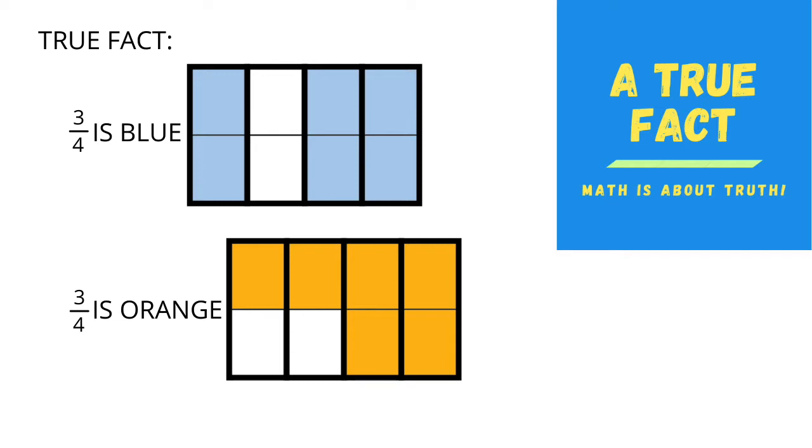Here's a hint. Three-fourths of the top rectangle is blue, and three-fourths of the bottom rectangle is orange. That's a true fact.